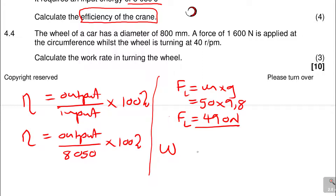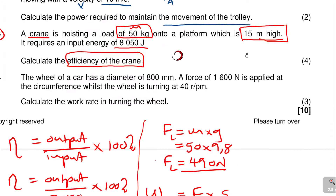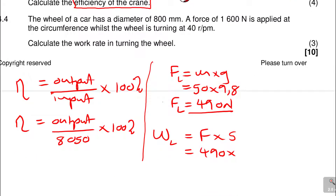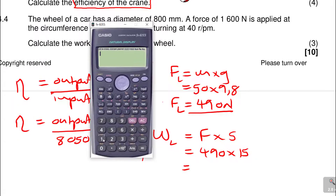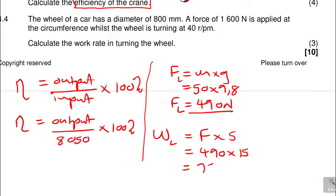Now let's look at the work done by the crane. Work done in moving the load equals force times distance. The force is 490 Newtons, and vertically the load is moved 15 meters. So work done is 490 times 15, which gives 7,350 Joules. This work done in moving the load is the output energy.